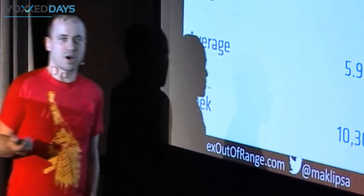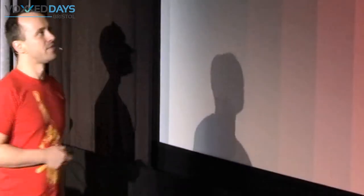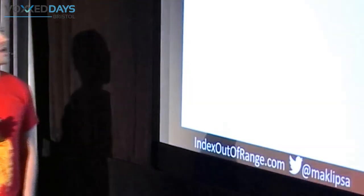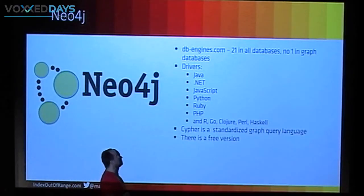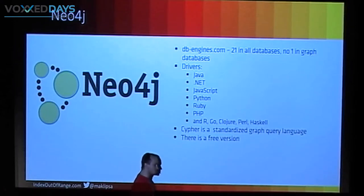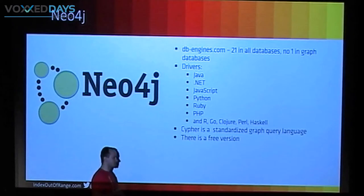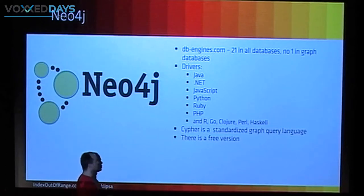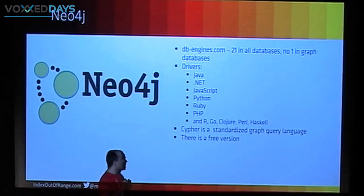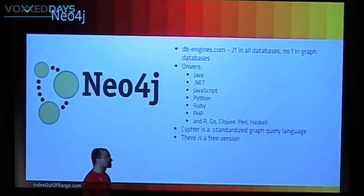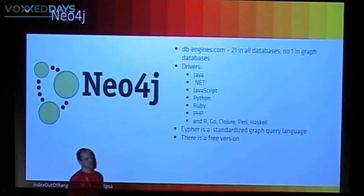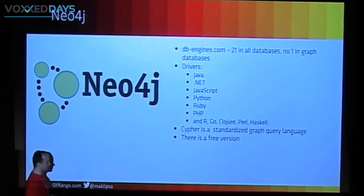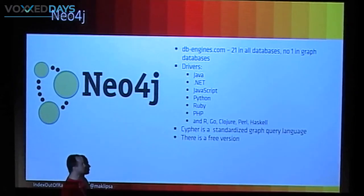Next, Neo4j. Why Neo4j? Because there is a site called DB-Engines, and on this site Neo4j is the most popular graph database, fluctuating between the 20th and 21st most popular database overall. It has drivers for almost any language. Cypher — they created something called OpenCypher, which is a standardized query language for graph queries. And of course there is a free version and a paid version; the paid version has support for online backups and so on.